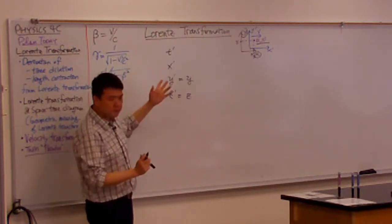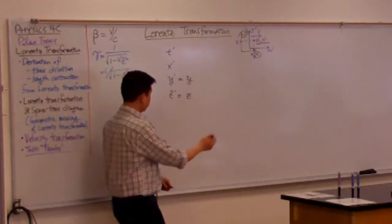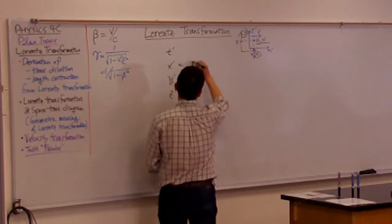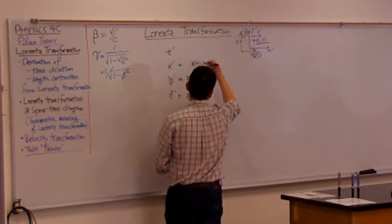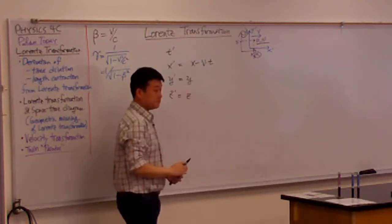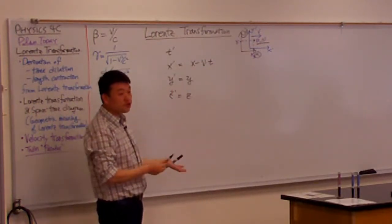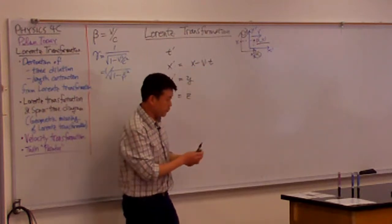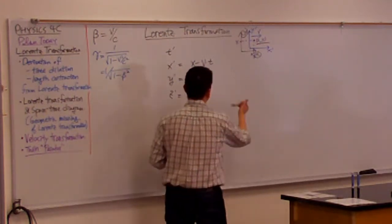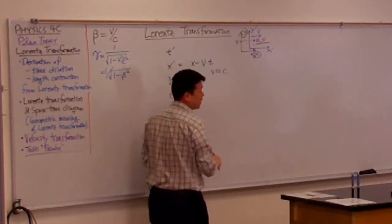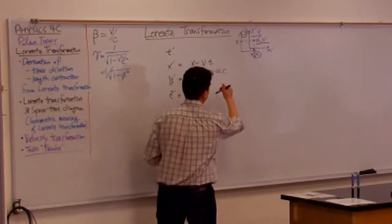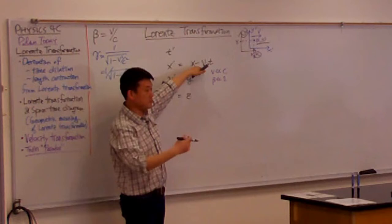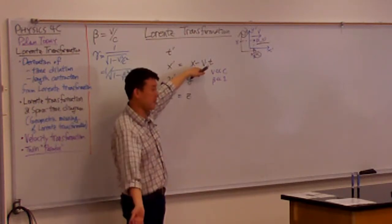So with X prime, from your intuition, you can guess this much. X prime would be X minus the velocity times time. And your intuition is not entirely incorrect. This is correct at low speed limit. If we are dealing with only situations where the velocity is much less than speed of light, or in terms of beta, if beta is much less than one, then this is correct.